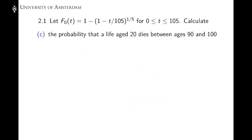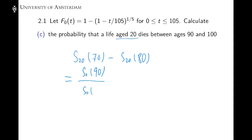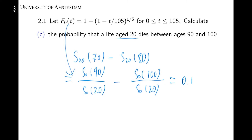In Part C, we want the probability that a life aged 20 dies between age 90 and 100. Writing this down, what we want is the probability that somebody currently age 20 survives another 70 years to reach age 90, but cannot survive more than another 80 years. Using the very important expression again, this probability is S0(90) divided by S0(20), minus S0(100) divided by S0(20). Computing this using the CDF gives us 0.1394.